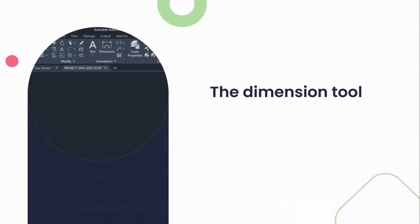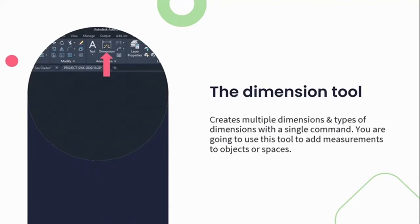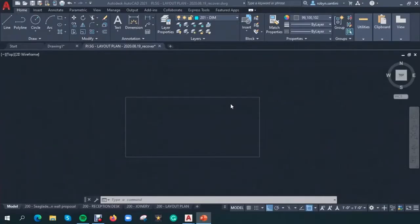Next, we move to the dimension tool — this is what your dimension tool looks like on your ribbon under your annotation section. This tool creates simple dimensions and types of dimensions with a single command. You're going to use this tool to add dimensions to objects or spaces within your drawings. To create a dimension, begin by selecting the dimension panel on the annotation tab of the ribbon, then select the dimension dropdown and select the type of dimension you're wanting to create.